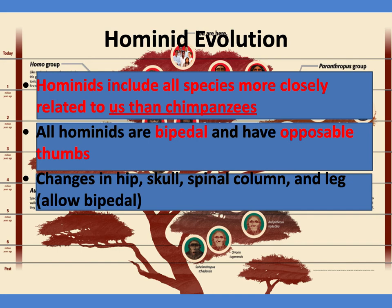A hominid is essentially every species more closely related to us than chimpanzees — that's a whole lot of stuff. In general, all hominids are at least mostly bipedal — they walk on two legs. They have nice opposable thumbs and all the other primate characteristics: big brains, everything else. The longer opposable thumb has been pretty useful. There were also a lot of changes in the skull, hip, and spinal column to allow bipedal walking, and we'll look at some of these groups as we go.